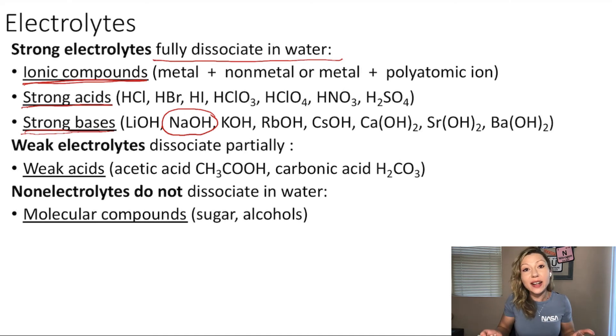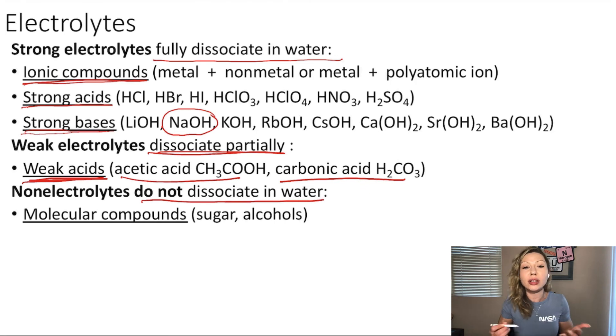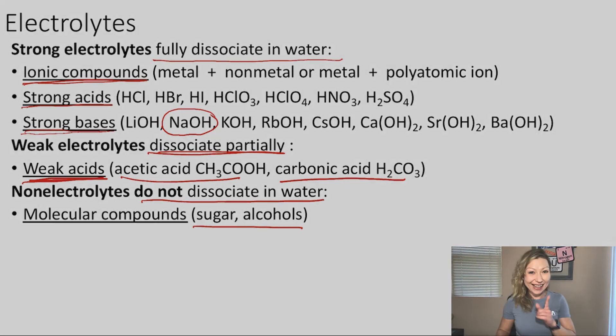So what are weak electrolytes? Weak electrolytes are weak acids. For example, acetic acid or carbonic acid, they only dissociate partially. And non-electrolytes are the compounds that do not dissociate in water. And those are generally molecular compounds, such as sugars and alcohols. I hope this makes sense. See you in the next video.